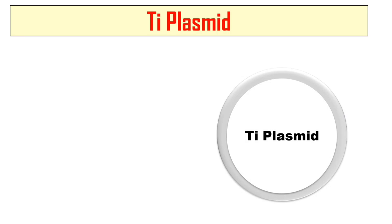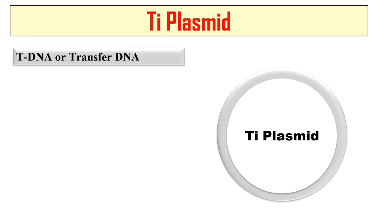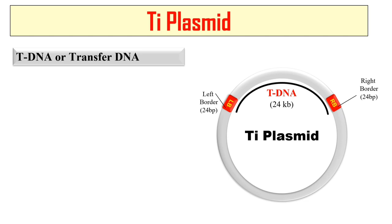Let's discuss the Ti plasmid — the various elements or parts of this Ti plasmid will be discussed in this slide. The first element it contains is the transfer DNA or T-DNA. This is the DNA which is transferred to plants for causing the crown gall disease. There are two kinds of sequences: the left border and right border, which are 24 base pair sequences. The DNA between these left and right borders is called T-DNA, which is 24 kb in length.